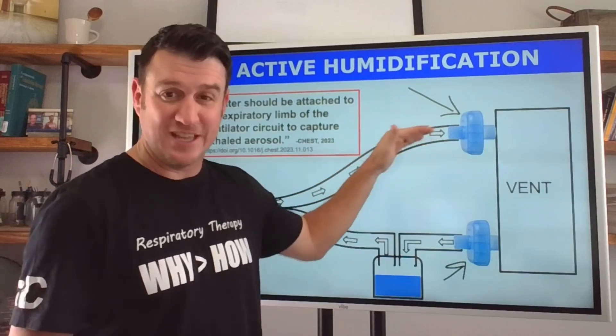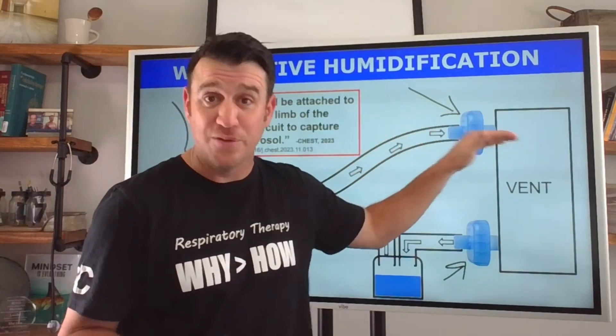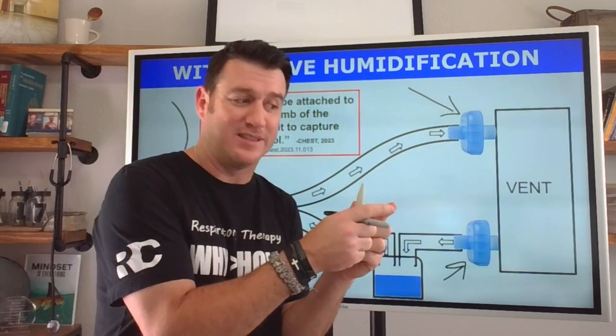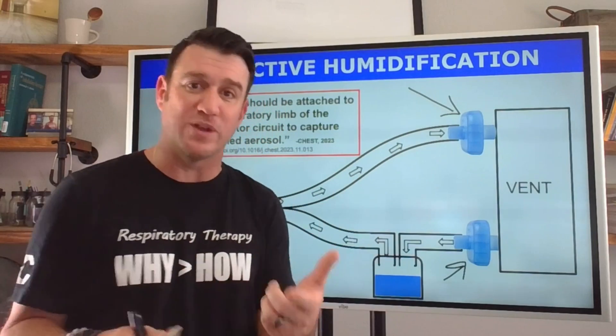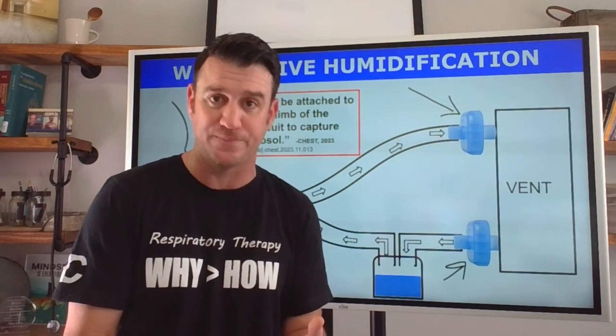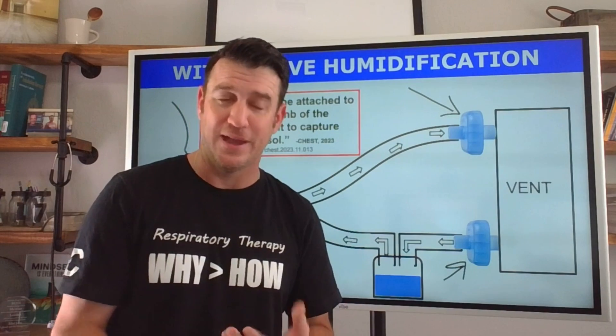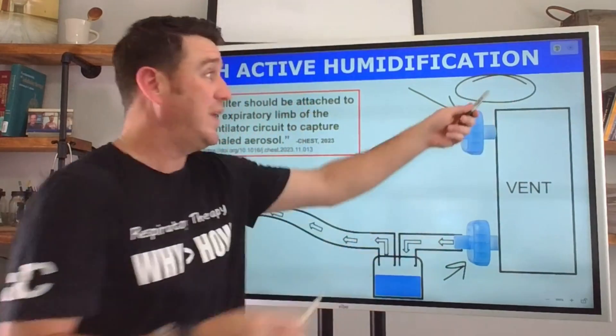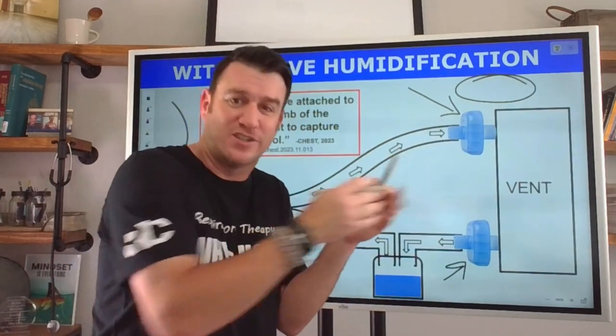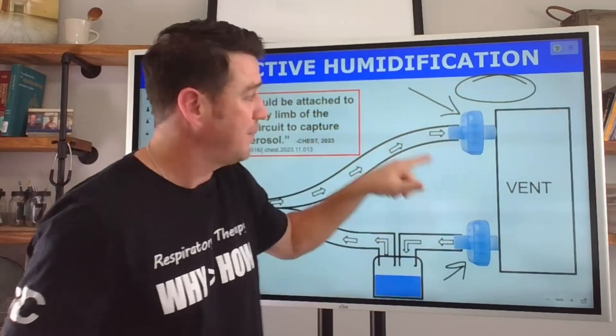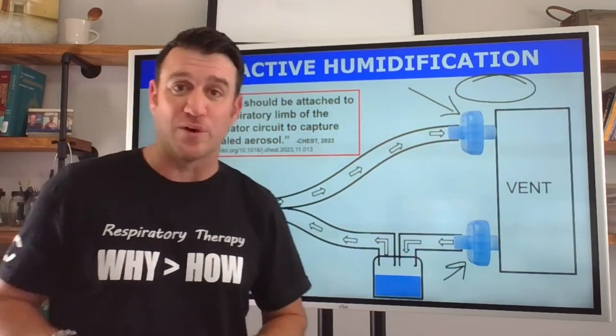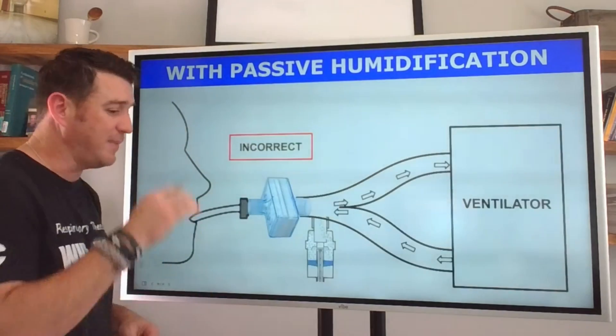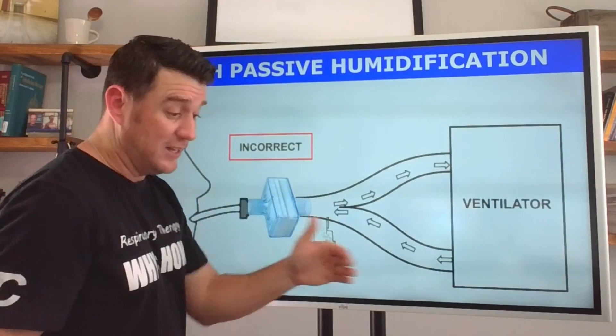An expiratory limb filter reduces environmental exposure and hazards associated with aerosol therapy during mechanical ventilation. It also reduces the amount of aerosol particles that return back to the ventilator that can impair and impede the accuracy of the ventilator in regards to pressure, flow, and volumes. Protecting the ventilator and the environment for which we exist in and for which visitors exist in is important, which is why an expiratory filter is valuable.